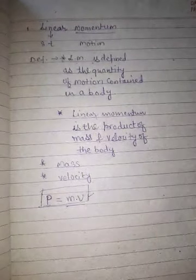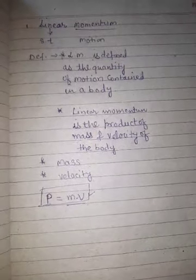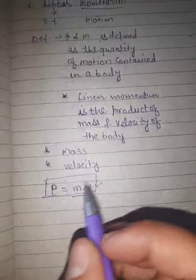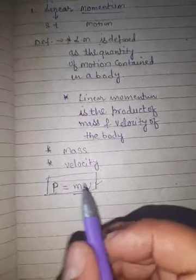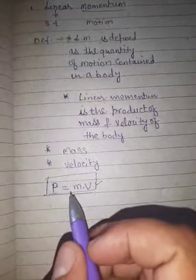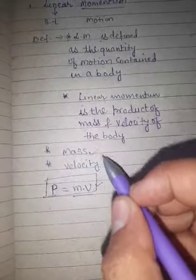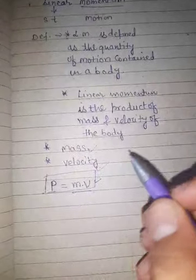So simply, we can say here there are only two factors which can affect linear momentum. Number one is mass, and number two is velocity.